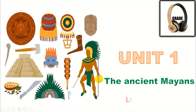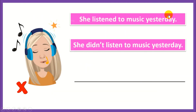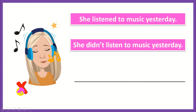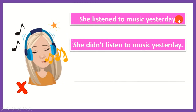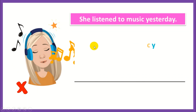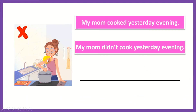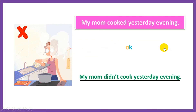Lesson 3. Read and choose the correct sentence. Look at the pictures and the icon. I have two sentences: 'She listened to music yesterday' or 'She didn't listen to music yesterday.' Look at the girl — the answer is: She didn't listen to music yesterday. Next: 'My mom cooked yesterday evening' or 'My mom didn't cook yesterday evening.' Well done, the correct answer is: My mom didn't cook yesterday evening.